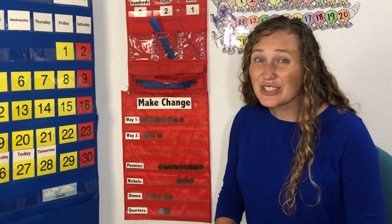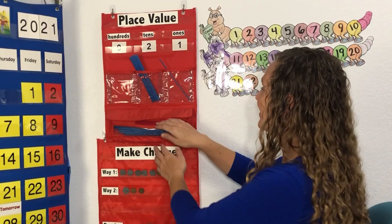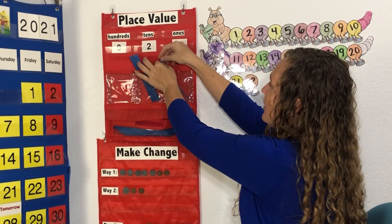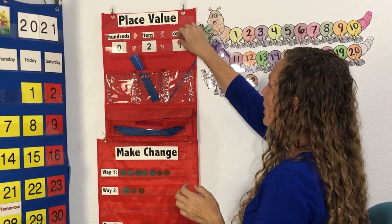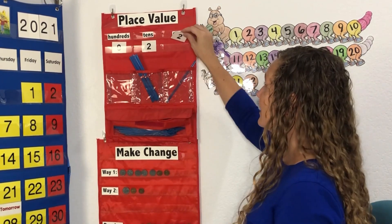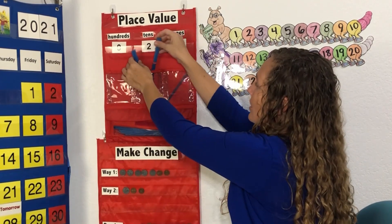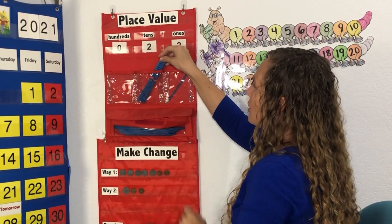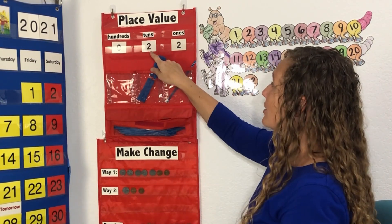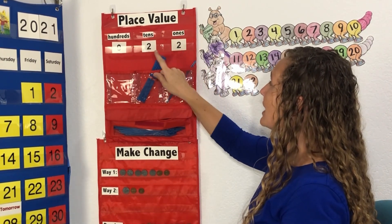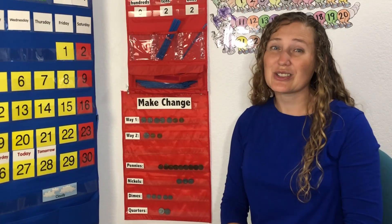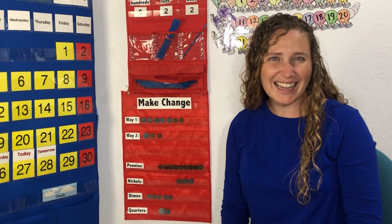Let's add another straw. We have one, two ones — two straws all by themselves. And one, two tens — straws in groups of tens. Two tens, two ones makes twenty-two. Twenty-two days we've had calendar time.